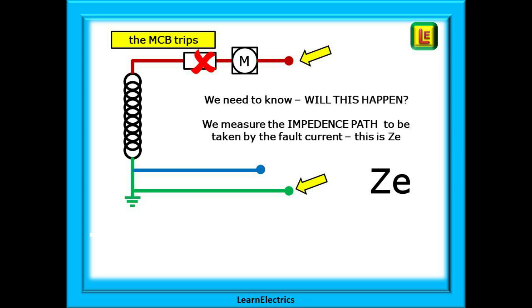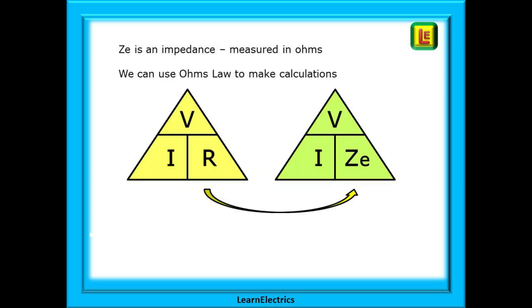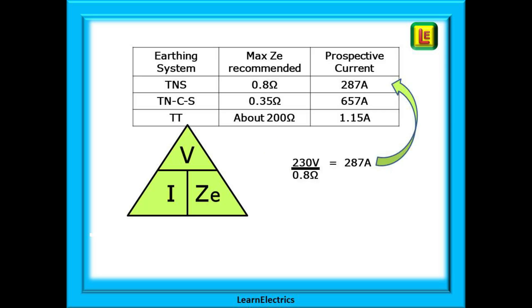And we need to know that this will in fact happen. And we do this by measuring the impedance path that the fault current will take and we call this impedance path ZE. Z for the impedance and E for external. ZE is something that you must be able to measure and it is recorded on the test certificates. We said that ZE is an impedance that can be measured in ohms and ohms law can be used. These two triangles show that voltage divided by current will give us ZE in ohms.